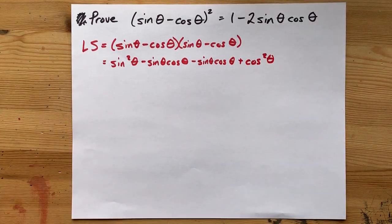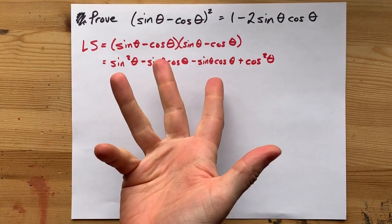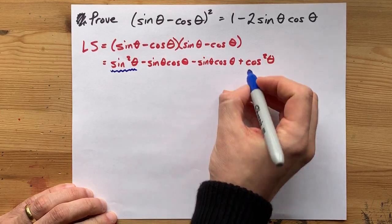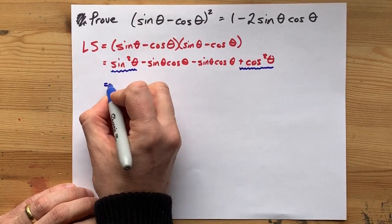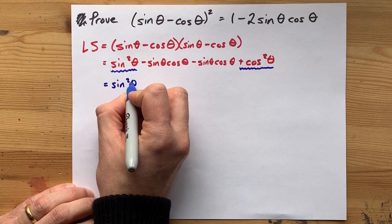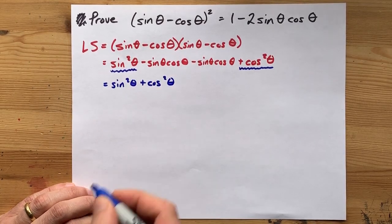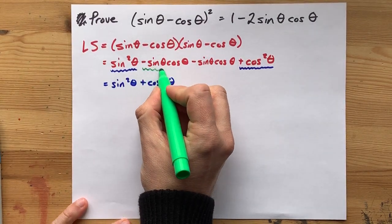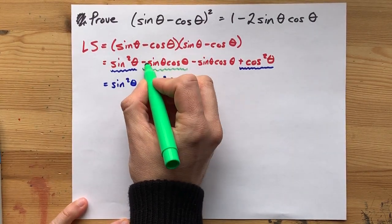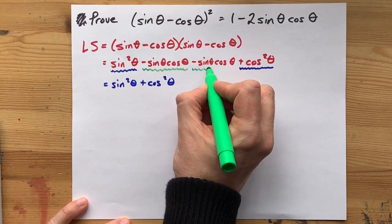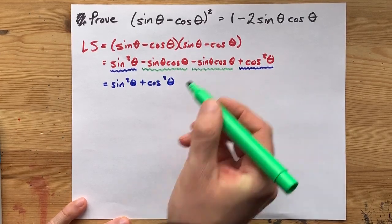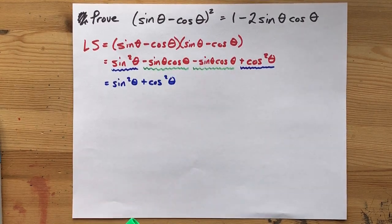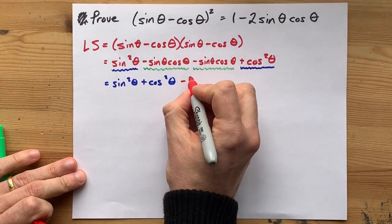Now, I'm going to collect these terms in a very clever way and you'll see why in just a second. I'm going to put my sine squared theta plus cos squared theta together right here at the beginning. But I'm also doing that and collecting those because I noticed that these are like terms. We have a minus sine theta cos theta and another minus sine theta cos theta. So how many sine theta cos theta's am I minusing in the end? The answer is I'm subtracting two of them.